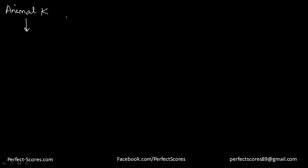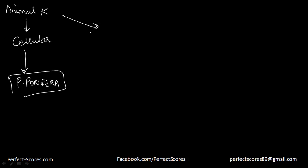So far we have just covered the introduction to this classification. We know that the animal kingdom is divided on the basis of levels of organization into two major types. One is organisms that have a cellular level of organization, that is phylum Porifera, and this is the phylum that we have covered so far. There are many others as well that have a tissue, organ, or organ system level of organization.